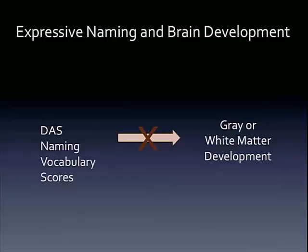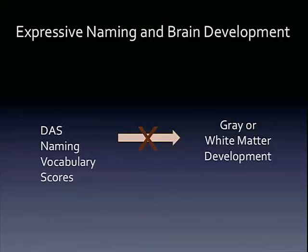Looking at the specific tasks on the DAS, we actually didn't find any relationships between the DAS naming vocabulary score and gray or white matter development, even when not controlling for age. One of our theories is just that this task may be too easy — even younger children are doing very well on it — so that's not allowing enough of a trajectory to happen. But regardless, we didn't see any relationships there.